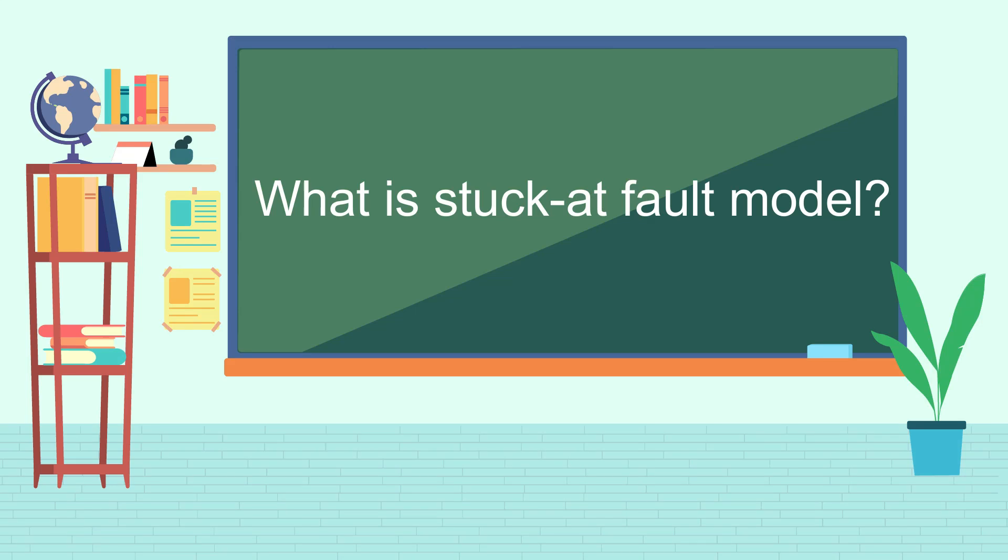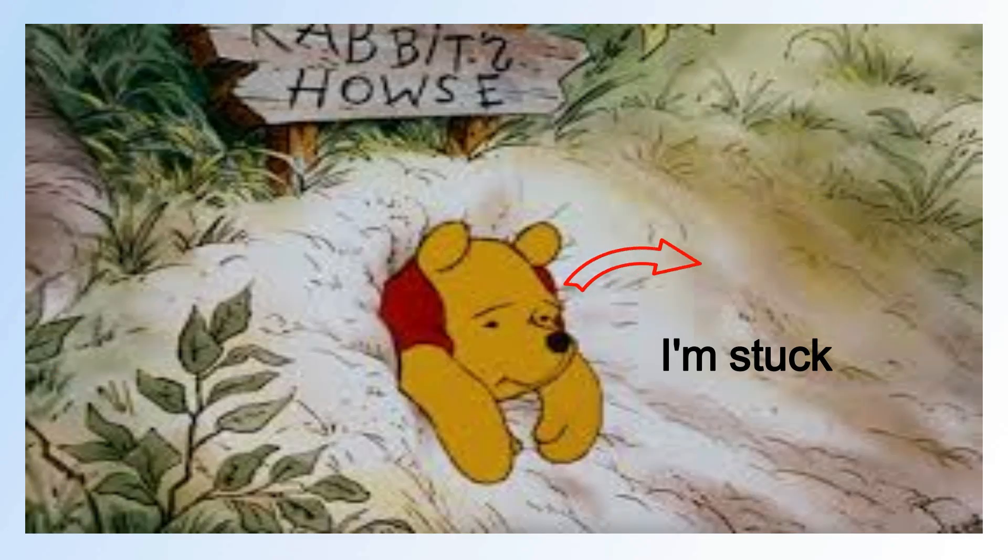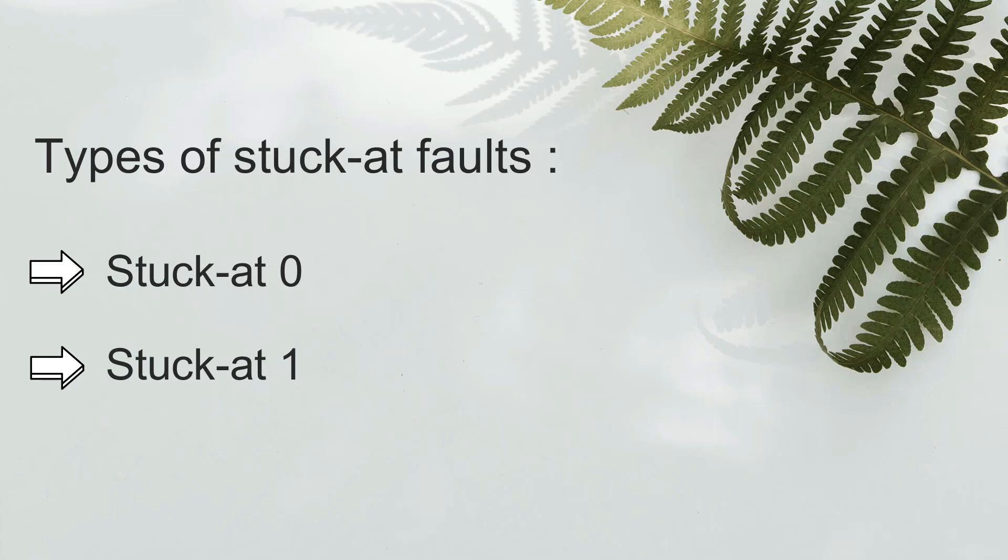What is stuck-at fault? Here we can see Winnie the Pooh got stuck in the wall. Similarly in chip also, if any logic gate node got stuck to a fixed value, that node is said to be at stuck-at fault. There are two types of stuck-at fault: stuck-at-0 and stuck-at-1.